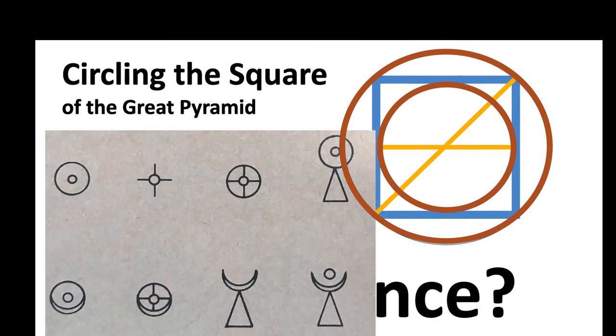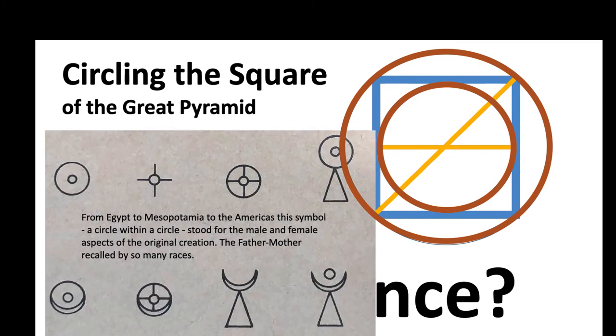Now here's some ancient symbols. From Egypt to Mesopotamia to the Americas, this symbol - a circle within a circle - stood for the male and female aspects of the original creation. We're looking at a creator, an androgynous or hermaphrodite, male and female, the mother-father recalled by so many races as the creator.